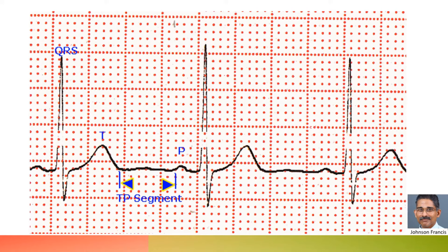But when the heart rhythm is fast, a good TP segment may not be seen, as the T wave of one cycle merges with the P wave of the succeeding cycle.